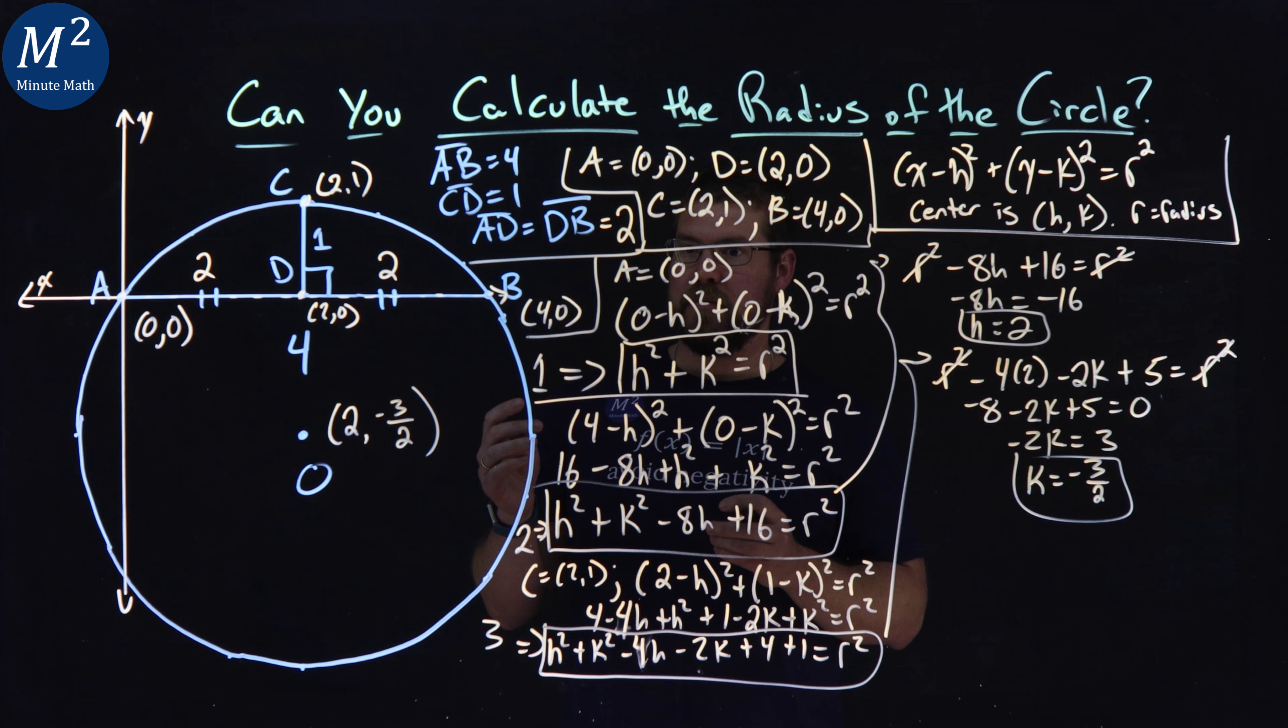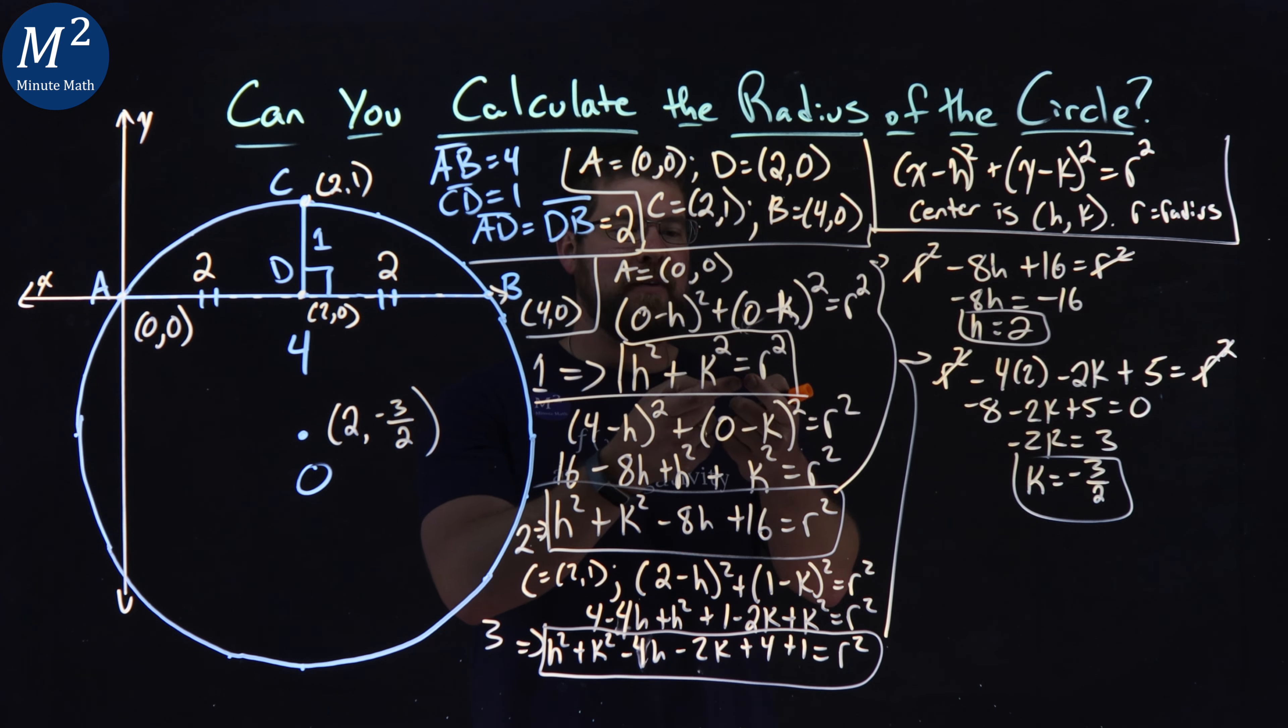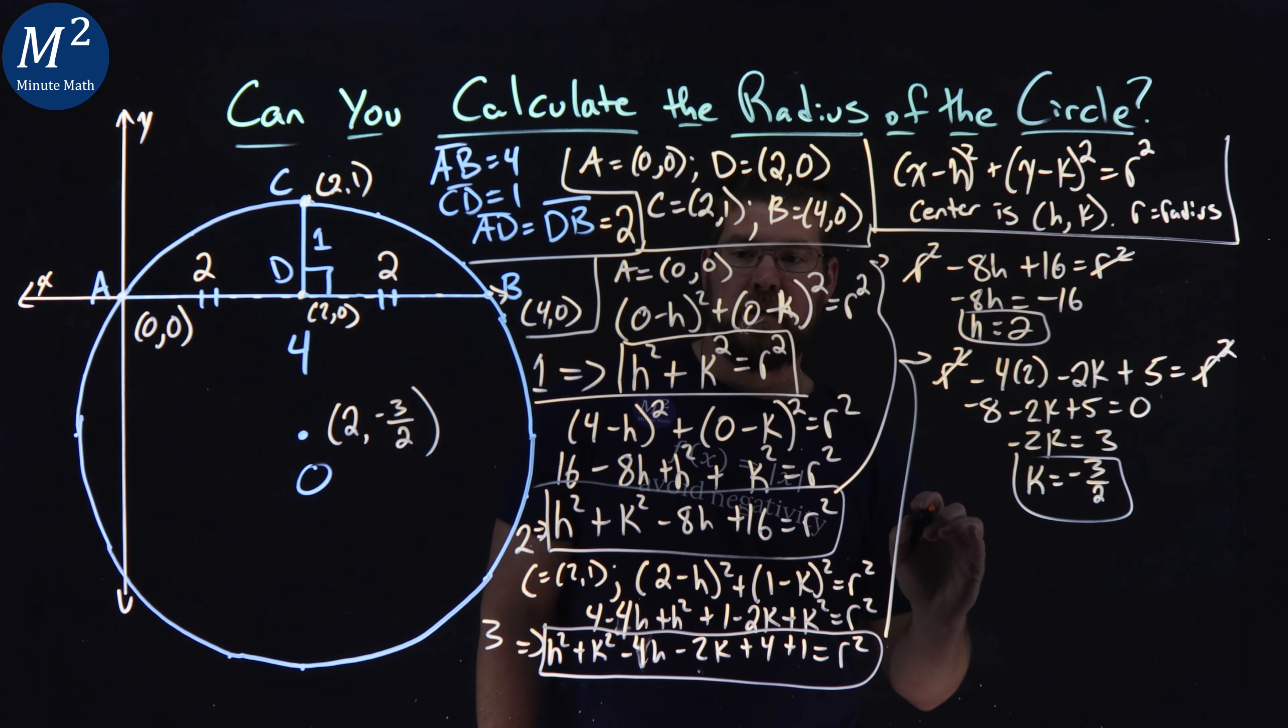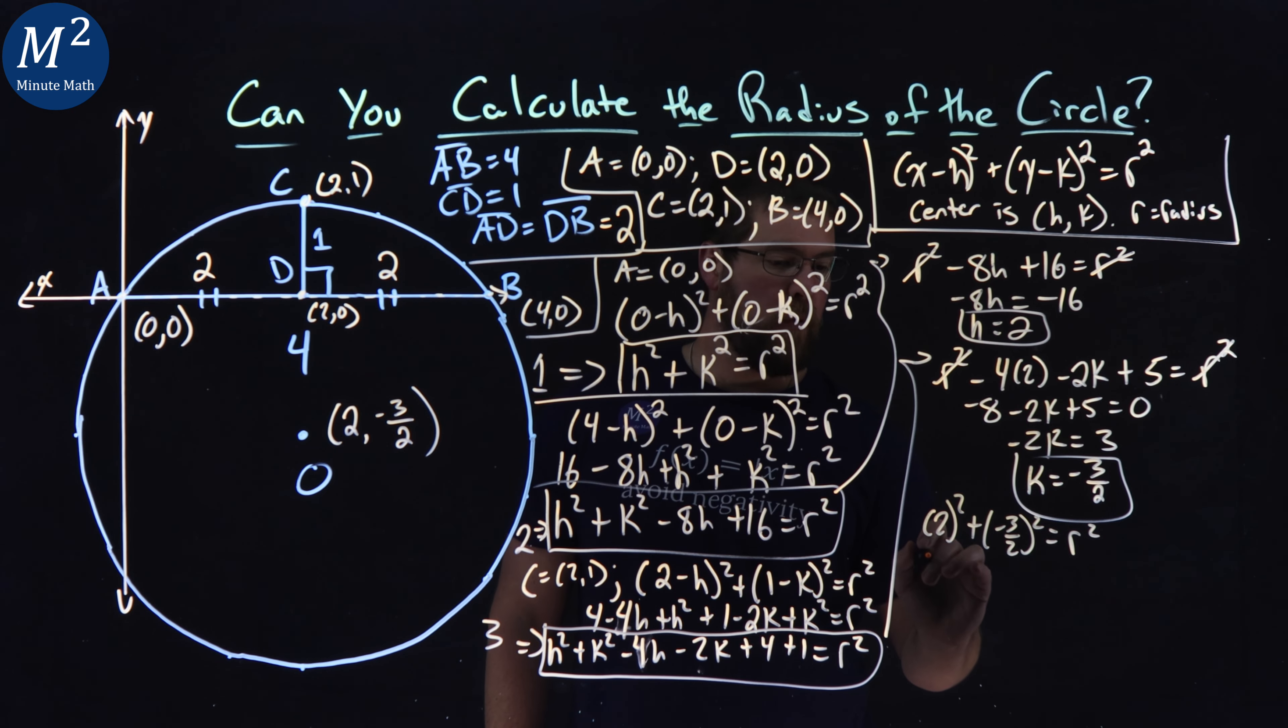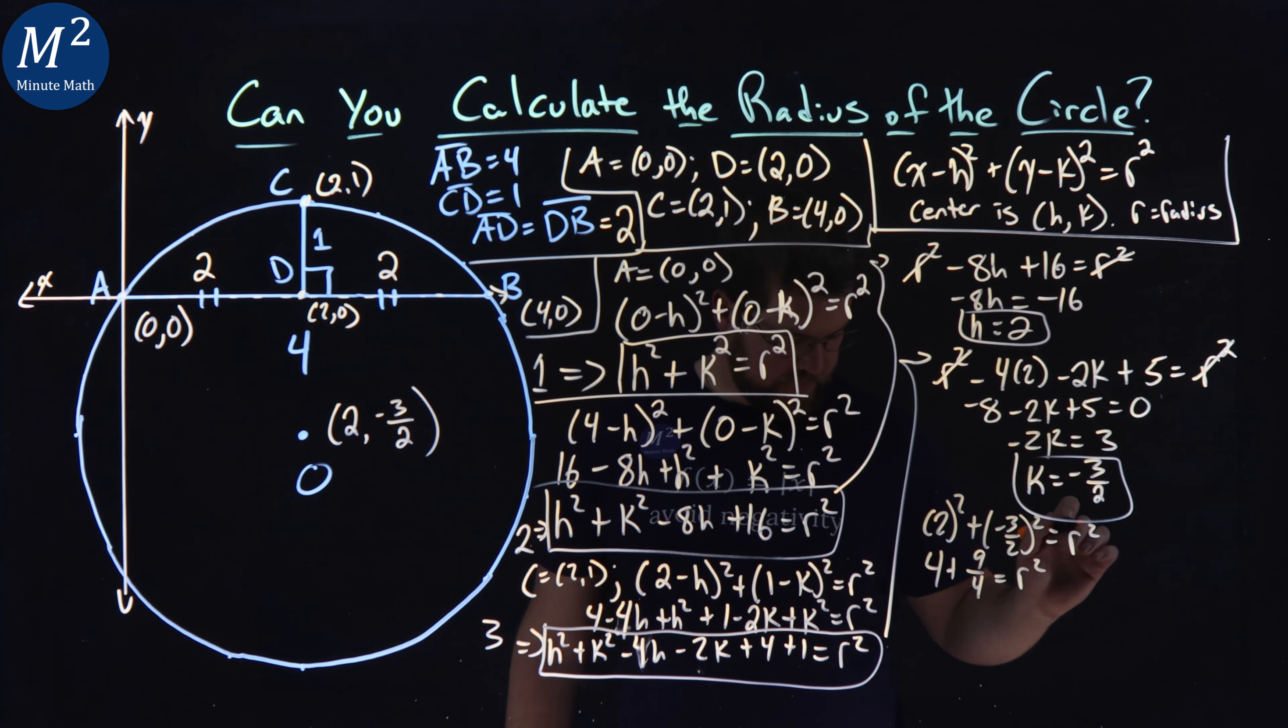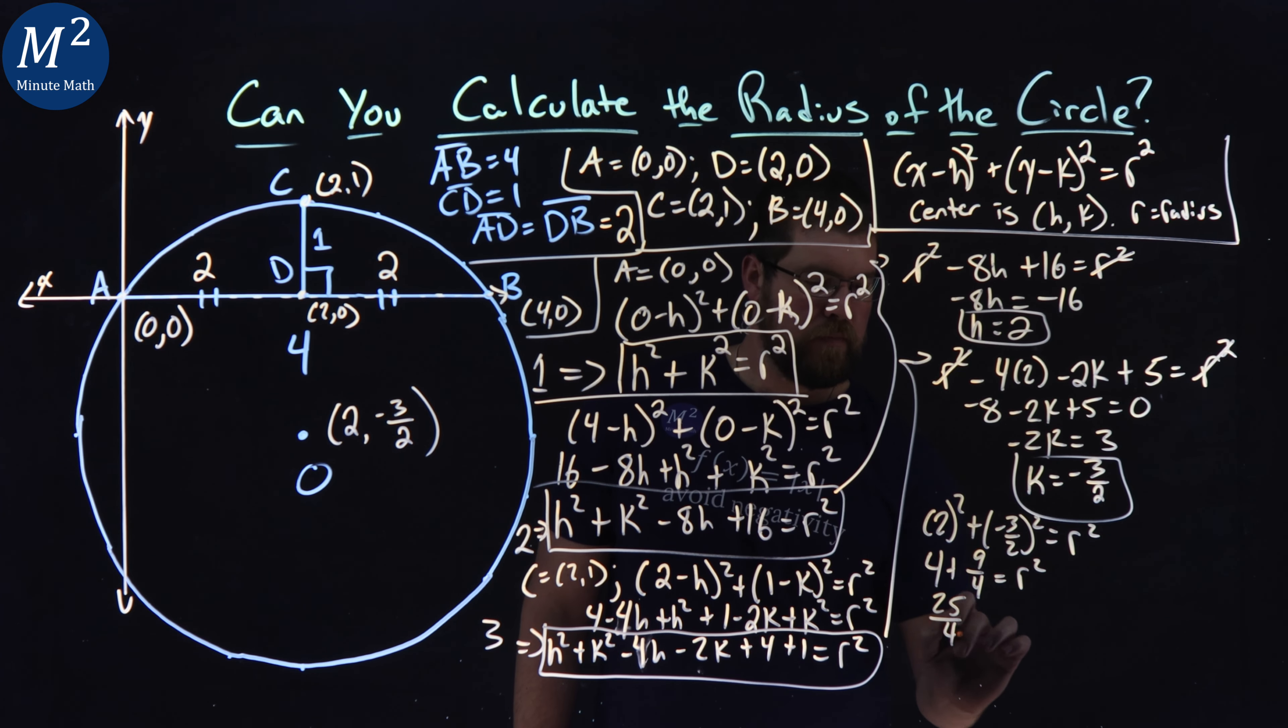So now we have the center of the circle. We want to find the radius, right? We need to find a radius. Well, luckily we have a nice formula here for H and K that involves a radius. We can plug those values in. So H squared plus K squared equals R squared. So we have 2 squared plus negative three halves squared is equal to my R squared. Two squared is 4. Negative three halves all squared is a positive nine fourths is equal to R squared.